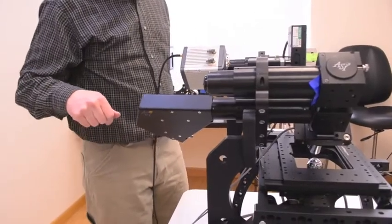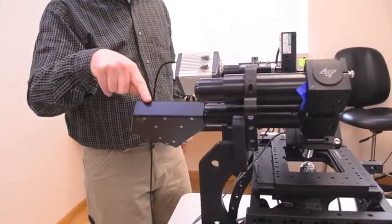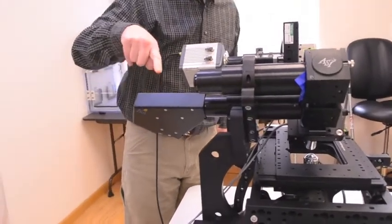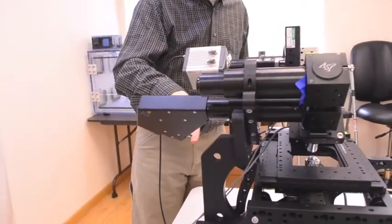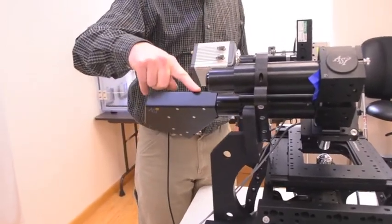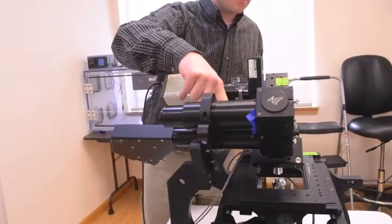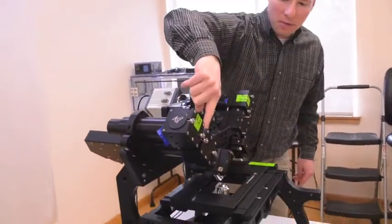So now I'm going to tell you about the DI SPIM components. We're going to start here at the scanner. This is what generates the light sheet, and the excitation beam simply comes in here on a fiber cable.